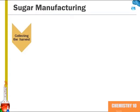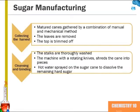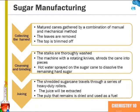We'll now go into sugar manufacturing. Sugar canes are gathered by a combination of manual and mechanical methods. The leaves are removed and the tops are trimmed off. From there, the stalks are thoroughly washed and a machine with rotating knives shreds the cane into fibers. Hot water is sprayed on the sugar cane to dissolve the remaining hard sugar. The shredded sugar cane then travels through a series of heavy-duty rollers, where the juice is extracted and the pulp that remains is dried and used for fuel.